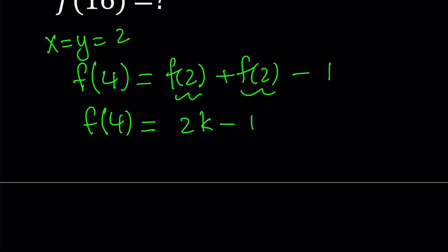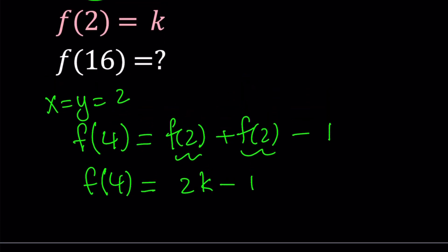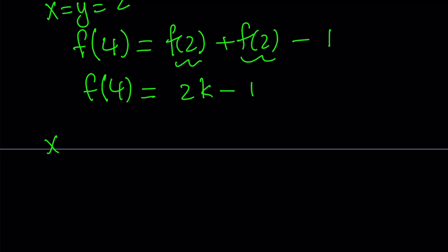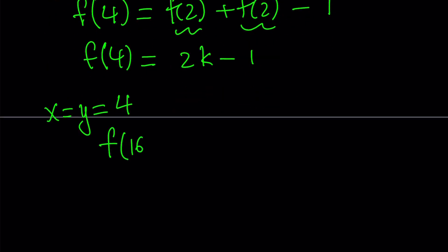Now, let's see how we can go to 16 from here. And I'm hoping that you've seen the solution path already. 4 times 4 is equal to 16. So I can now set x and y both equal to 4. And now that's going to give me f of, from the definition, 4 times 4, which is 16, equals f of 4 plus f of 4 minus 1.